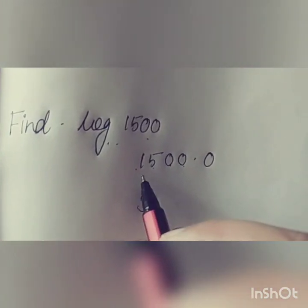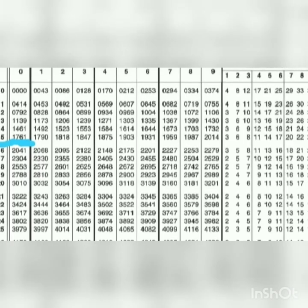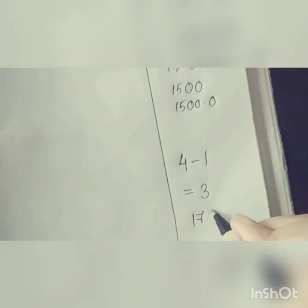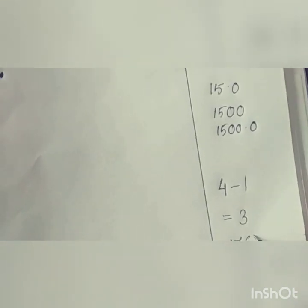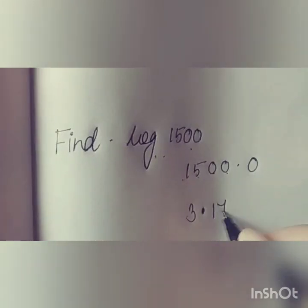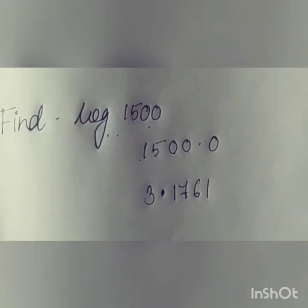Now take the first two digits, that is 15, and find it on your log table. Then come to the next digit, that is 0, and find out — it gives 1761. As there is no mean difference for 0, just write 1761. So the log of 1500 is 3.1761.